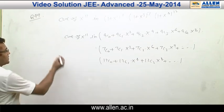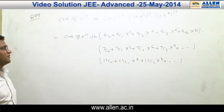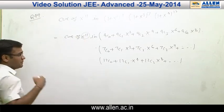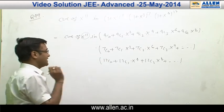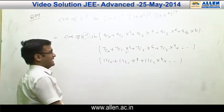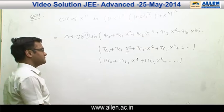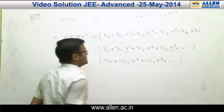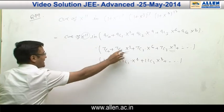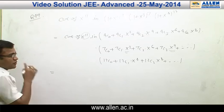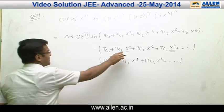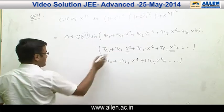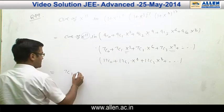We need to find the coefficient of x¹¹ from this product. A term containing x¹¹ appears only if we take one odd power of x and the remaining two even powers. The odd powers available are x³ and x⁹. If we pick x³ from the second bracket, then we need x⁸ from the other two brackets. The required coefficient is 7C1 · 4C0 · 12C2.